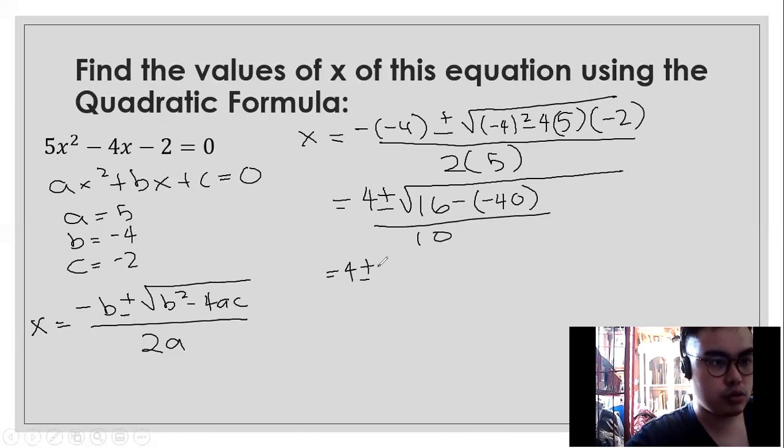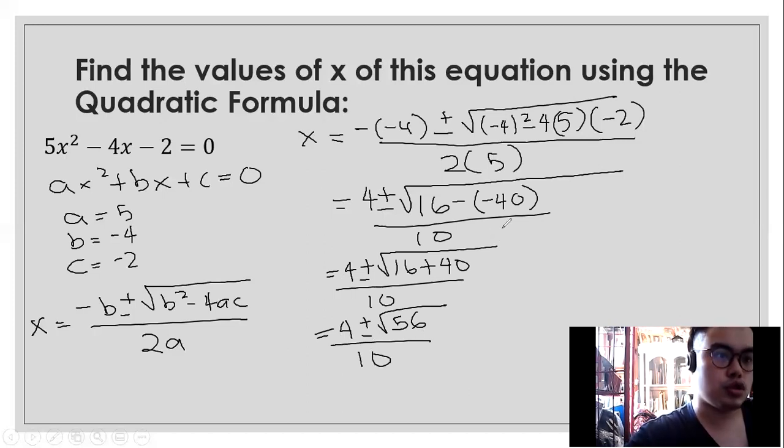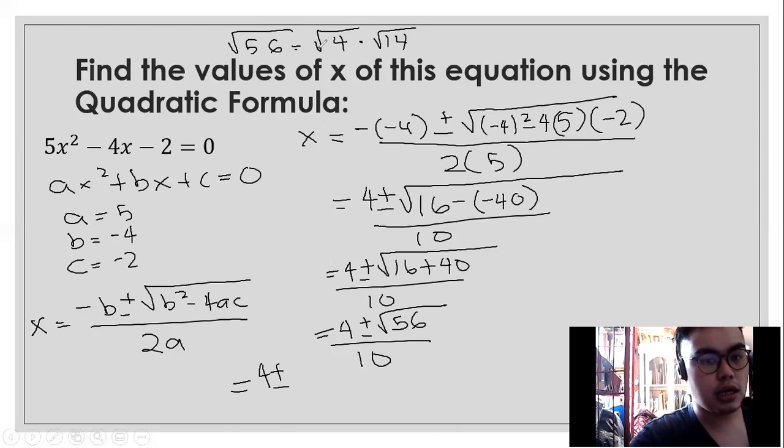We're going to observe these signs. Then, ipa-finalize na natin na unti-unti. What we're going to do is find the square root of 56. Kaso, perfect square ba si 56? Of course not. It's not a perfect square. The other way to find the square root of 56 is, we're going to find two factors. What are the factors of 56? It will be 4 and 14. Kailangan, yung isa sa factors nila ay perfect square. Para mag-simplify tayo, para makahanap tayo ng simplified form ng non-perfect square na number.